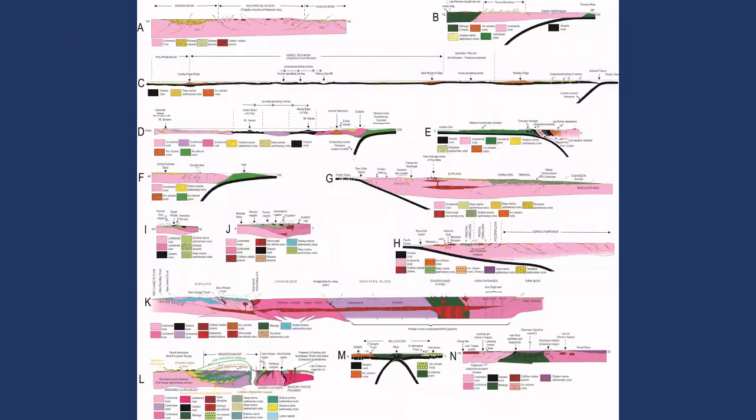These are some cross sections across these mountain belts. As you can see, these are the Andes. This is Macron. This is the Calabria and the Tyrrhenian Sea. Turkey, that's the Marianas. This is Tibet. These are the Alps. This is Oman. This is Western Turkey. As you can see, all of them are asymmetric.